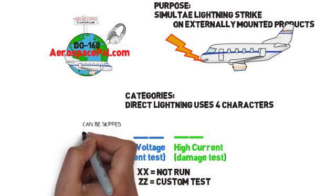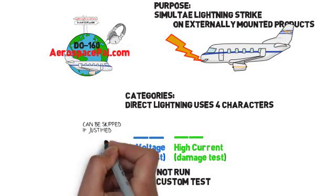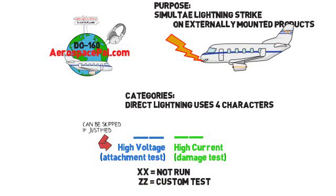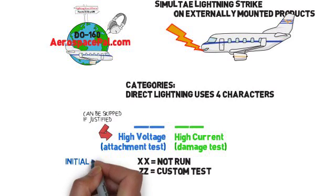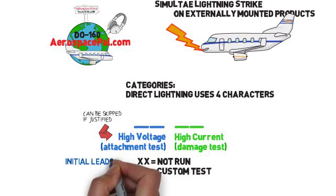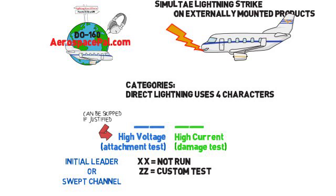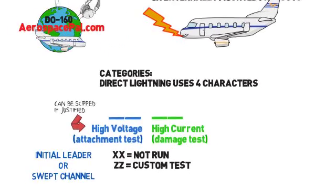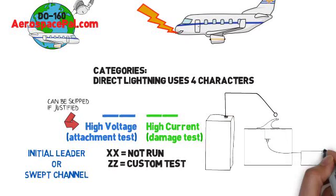The high voltage test can be skipped if it is obvious where the direct lightning strike will hit. The high voltage test setup may be run using two different methods. The initial leader or swept channel attachment test both accomplish the same thing, and the swept channel attachment test may be run at multiple positions depending on the size of the EUT.